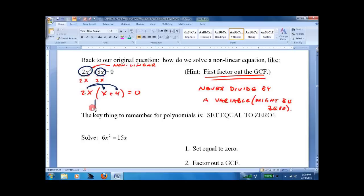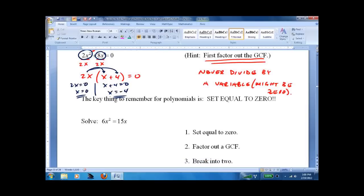And now we have it, where we can set it up. 2x equals 0, x equals 0. x plus 4 equals 0, x equals negative 4. So, that's it. The key thing to remember, though, is always set equal to zero.